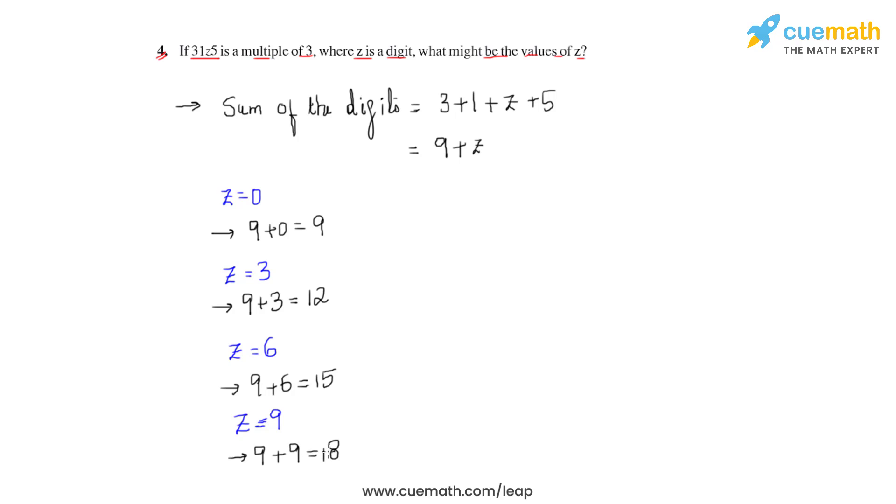Now since it's given in the question that z is a single digit, hence we cannot assume any further values of z. So to answer this question, the different values of z which are possible are 0, 3, 6, and 9.